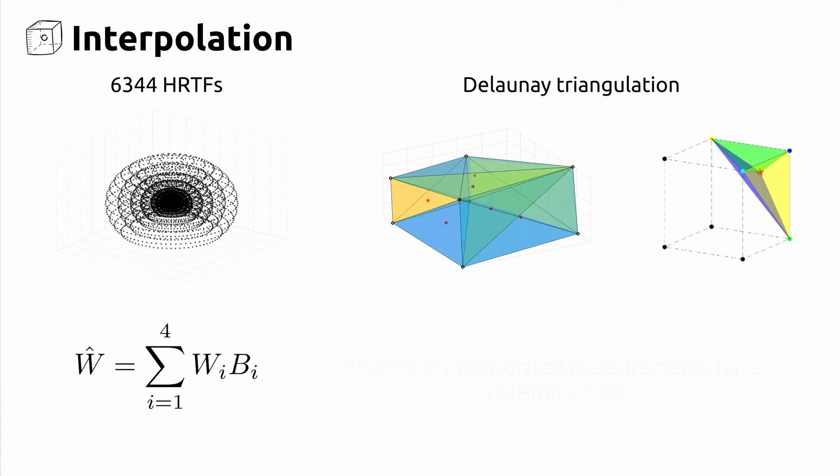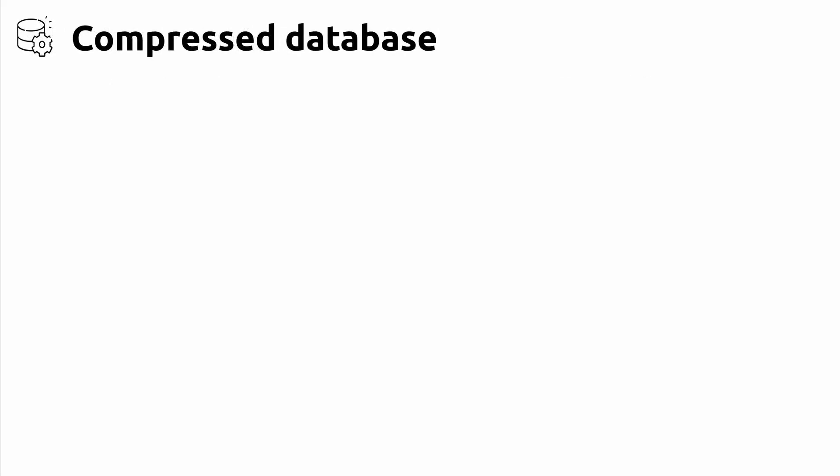To increase even more the number of measurements in the database, we include locations interpolated from the original measurements. The interpolation was made offline using the Delaunay triangulation and barycentric method. 99.49% of the interpolated measurements also have less than 1 decibel spectral distortion.